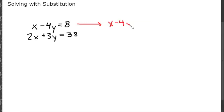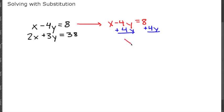In the first equation x minus 4y equals 8, to solve for x we add 4y to both sides. That gives us x equals 8 plus 4y. Now we can use substitution, plugging this expression in for x in the second equation.